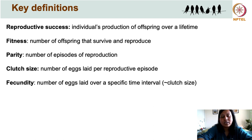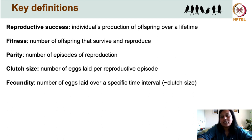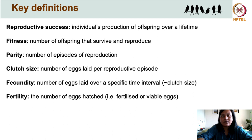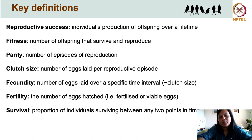Fecundity also refers to the number of eggs laid over a specific time interval. If this specific time interval coincides with one reproductive episode, then it is the same as clutch size. But you can also talk about fecundity over a breeding season or over multiple years. Fertility refers to the number of eggs that are hatched — that is, fertilized or viable eggs. Finally, survival refers to the proportion of individuals that survive between two points in time.